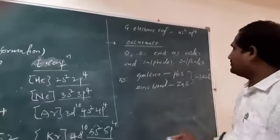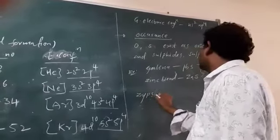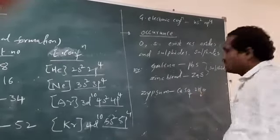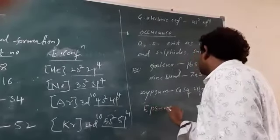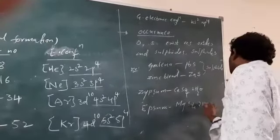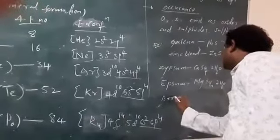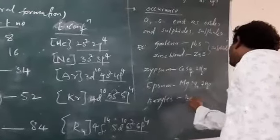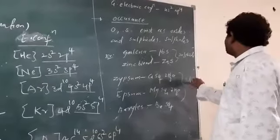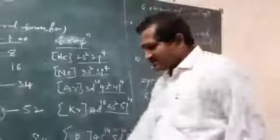And you see sulfate: gypsum, formula calcium sulfate and 2 moles of water. And epsom, magnesium sulfate with 7 moles of water. And barites, barium sulfate. These are the sulfate ores. So generally these are existing as sulfites.